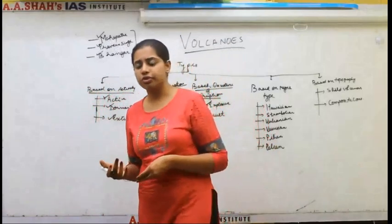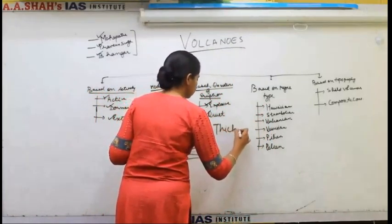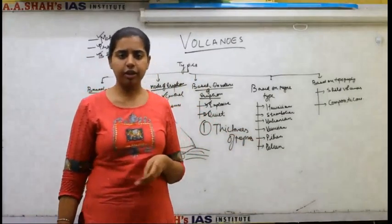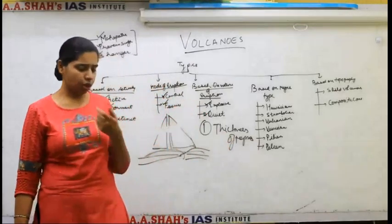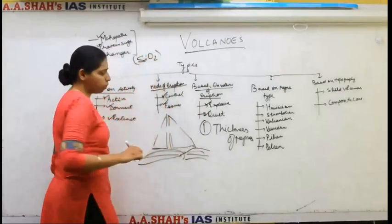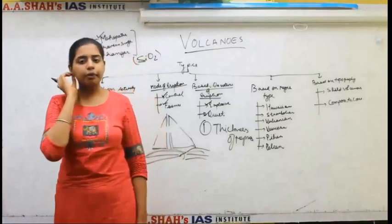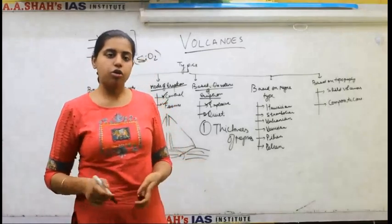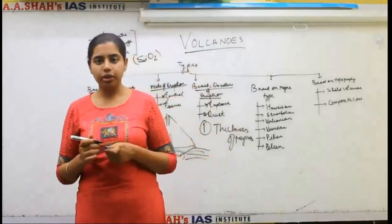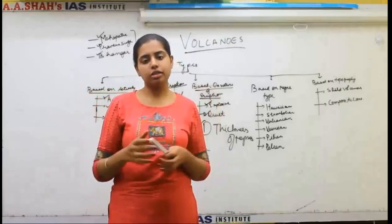The reason for explosive versus quiet eruptions is the thickness of the magma. Certain magmas are very thick and certain magmas are more fluid. Always remember that any magma with a higher content of silica (SiO₂) will be thicker. When the magma is very thick — like ketchup compared to water — the rising of magma and its coming out from the volcanic chamber becomes difficult. It has to be pushed up with a lot of pressure, which results in an explosive kind of eruption.